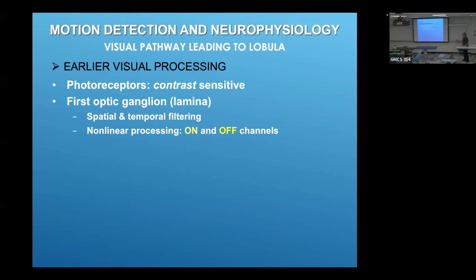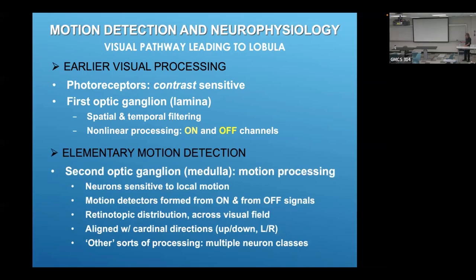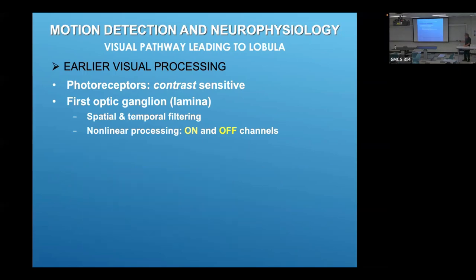Immediately following the photoreceptors is an optic ganglion called the lamina. This performs what look like operations of spatial and temporal filtering, and also various forms of nonlinear processing. One of particular interest is the separation of signals into on and off channels, where an on-channel responds to increases in luminance and an off-channel to decrements in luminance. One of these channels responds with excitation, which is interesting - the on-channel you could understand, but the off-channels get excited when something gets dimmer.